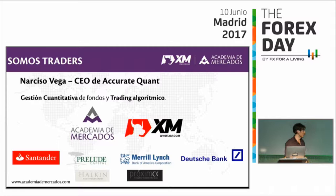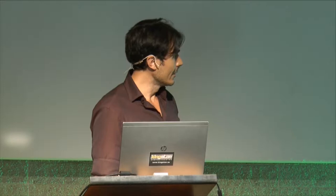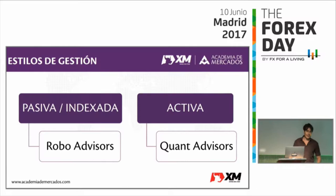Las dos cosas principales que necesitamos para realizar trading algorítmico de forma profesional son una buena plataforma de trading y formación. La formación es súper clave, que es lo que nos proporcionan tanto XM como Academia de Mercados. Vamos a empezar aprendiendo un poco sobre de dónde sale la gestión algorítmica, si es una cosa nueva o lleva tiempo.